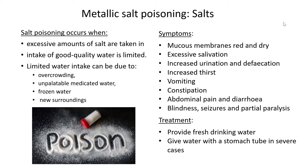In severe cases, give water with a stomach tube. Sometimes when animals are so thirsty they struggle to actually swallow, so even if provided with fresh water they won't be able to drink it. If the animal has gone blind or is experiencing seizures, it won't be able to go look for water. A stomach tube can be placed through the mouth or through the nose, hooked up to water, and the water is delivered straight into the stomach of the animal.